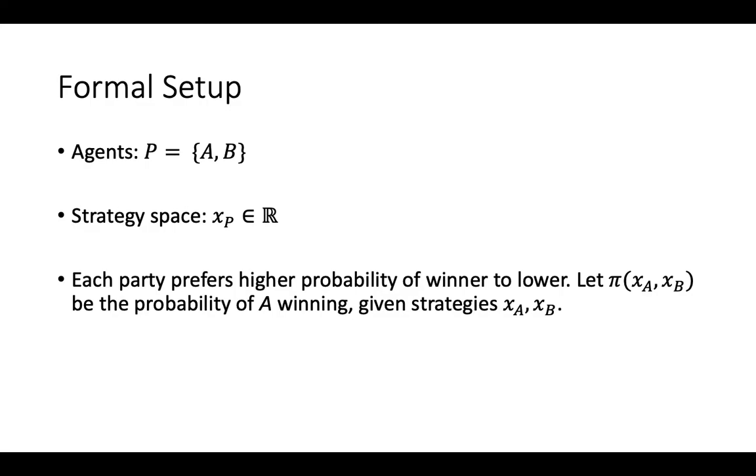So we have agents, party A and party B. Their strategy space is going to be a choice of a point on the real line, and each party prefers a higher probability of winning to a lower one. So pi X sub A, X sub B is going to be the probability of A winning, conditional on these two strategies being played by the parties. And obviously for party B, it's just going to be one minus this function pi. And if you're party A, you want this to be as high as possible.